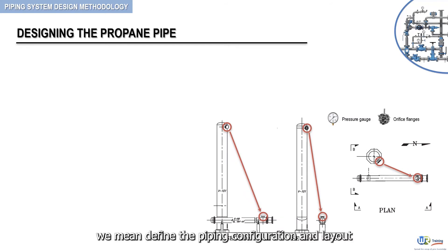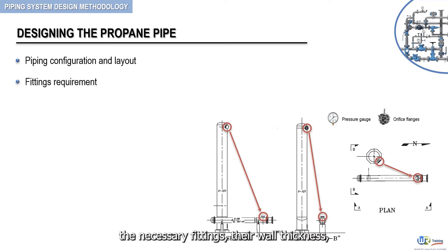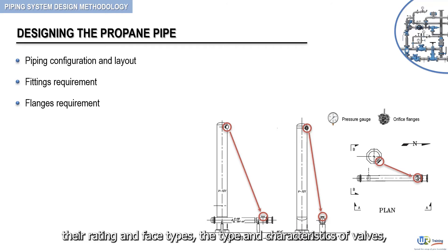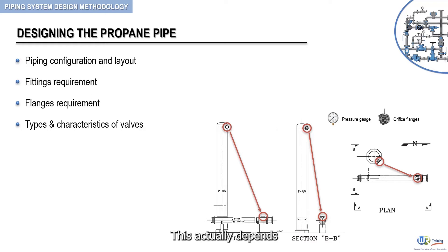Now, by designing the propane pipe, we mean defining the piping configuration and layout, the necessary fittings and their wall thickness and rating, the necessary flanges and their rating and face types, and the type and characteristics of valves, if applicable. This actually depends on whether we want a device to start, stop, or throttle the flow of propane through the overhead pipe.